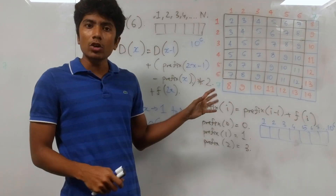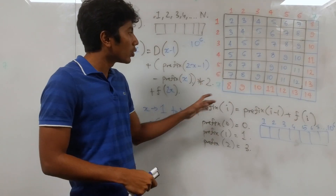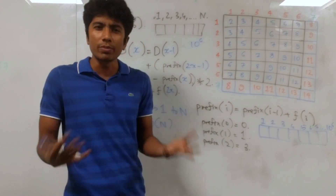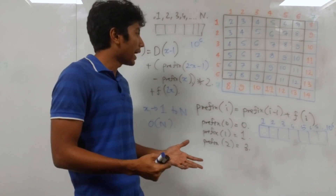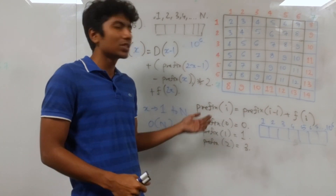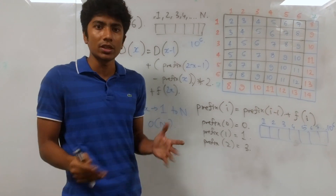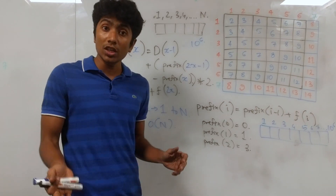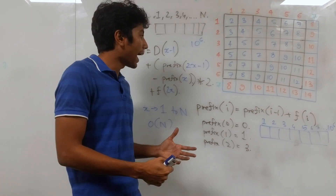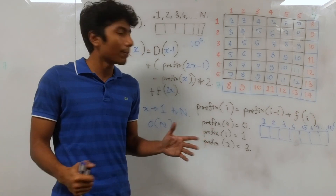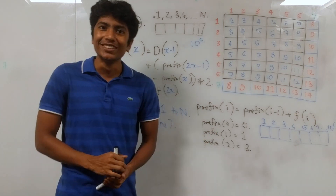Anytime you get a test case asking for some value n, you just look it up and print the answer. This problem is actually quite easy if you can recognize the patterns and know about prefix sums. I'll attach the link for the code in the description along with some links about prefix sums. If you have any doubts or suggestions, leave them in the comments below, and subscribe for further notifications. Until next time, bye!